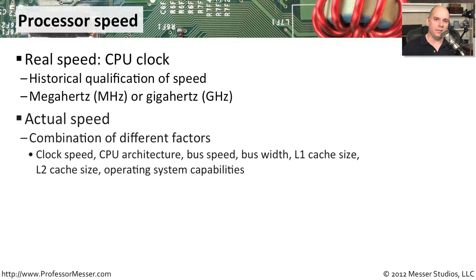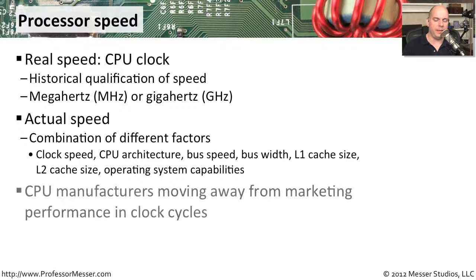But of course, the actual speed of the computer relies on a lot of different specifications. You can look at factors such as the architecture of the CPU itself and how it's able to use all of the different processes inside of it — the speed of the bus, cache sizes, the capabilities of the operating system. There are so many variables involved. You can't just look at the CPU speed to determine how fast a computer is really going to be.